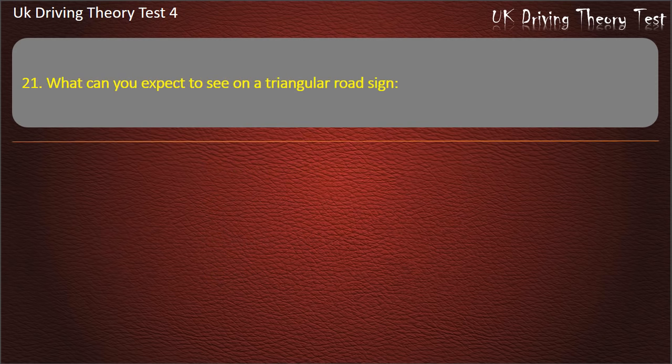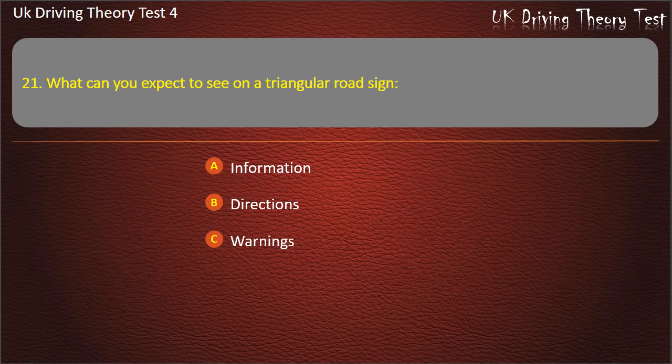Question 21. What can you expect to see on a triangular road sign? Information; directions; warnings; or instructions. Answer: Warnings.